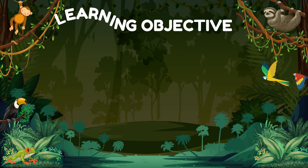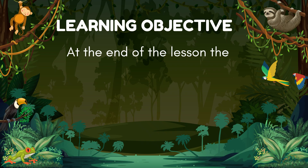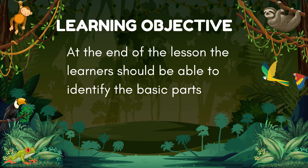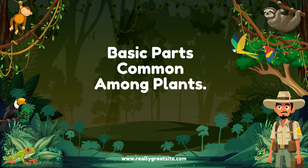Our learning objective: At the end of the lesson, the learner should be able to identify the basic parts common among plants. Today, we're going to study about basic parts common among plants.